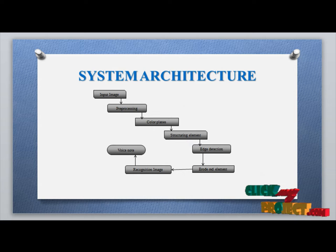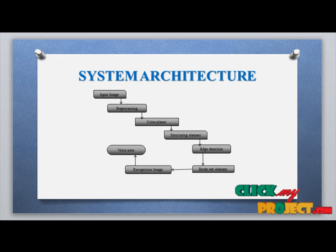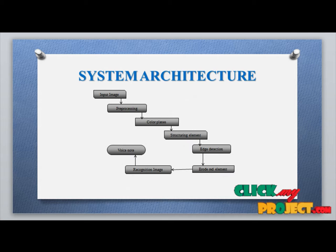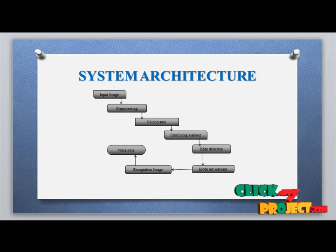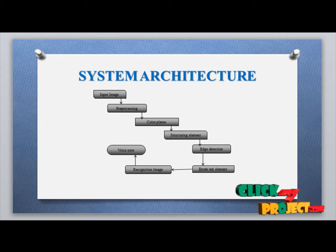In the system architecture, a dataset is collected from the internet or a separate dataset source, including signboards from India or globally. You upload an input image, apply pre-processing across the red, green, and blue channels, then apply thresholding to obtain a binary image and detect red and yellow elements separately. Using color planes and structuring elements such as an octagon, disc, or spherical element, you apply edge detection and morphological operations. Finally, the image is recognized and the type of sign is displayed.